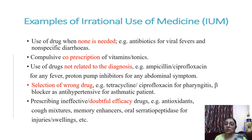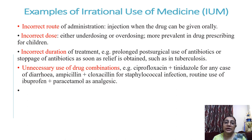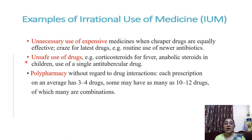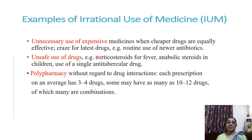Further examples include: prescribing drugs of ineffective or doubtful efficacy like antioxidants, cough syrups, or oral serosopeptides for injury or swelling; incorrect route of administration, such as injection when the drug can be given orally; incorrect dose — either underdose or overdose, especially in pediatric patients; incorrect duration, like prolonged post-surgical use of antibiotics or stopping antibiotics as soon as the patient gets relief, as seen in tuberculosis; and unnecessary drug combinations like ciprofloxacin and tinidazole in diarrhea or paracetamol and ibuprofen together as analgesics.